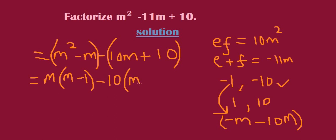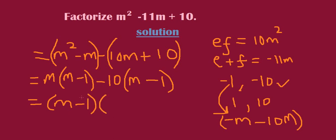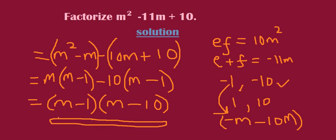After taking 10 out, we remain with m, and here we remain with 1. It has to be negative 10 so that negative 10 times negative 1 gives us back the original positive 10. At this stage we see m minus 1 and m minus 1, so we take one of that pair out — m minus 1 — and then we take m minus 10. We have now fully factorized our expression.